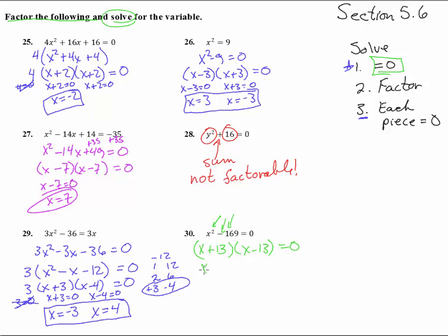And so that gives us x plus 13 equals zero. Set this piece at zero and we get x equals negative 13. Set this piece to zero and it gives us x equals positive 13. And there we have that one. Good.